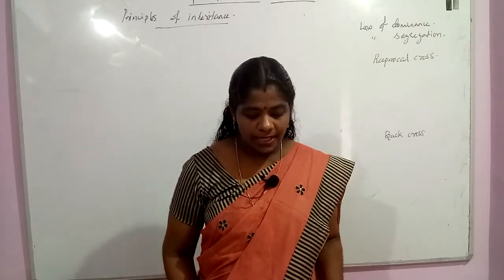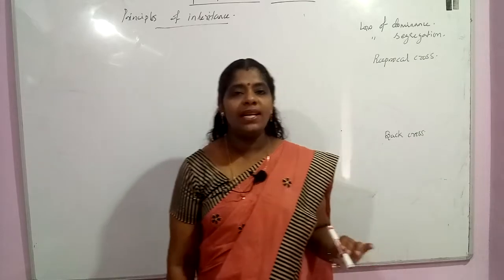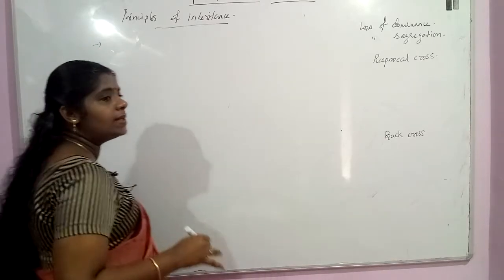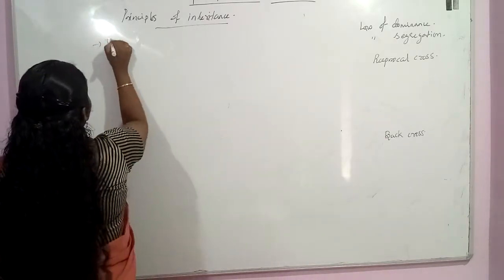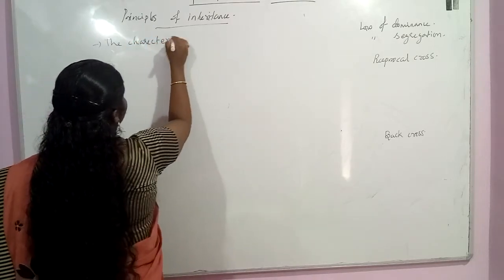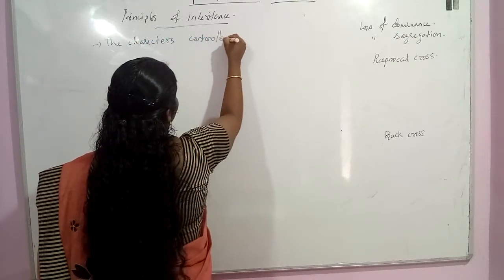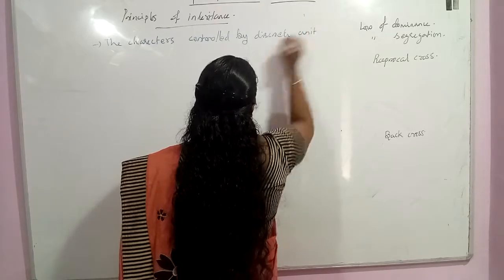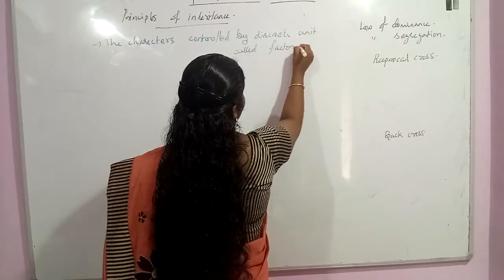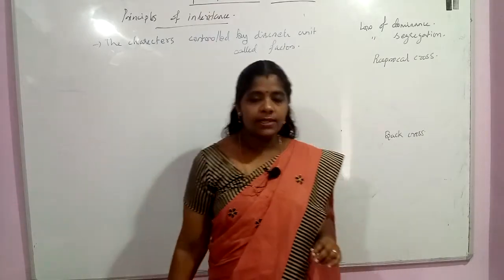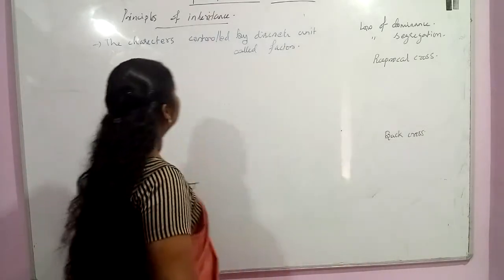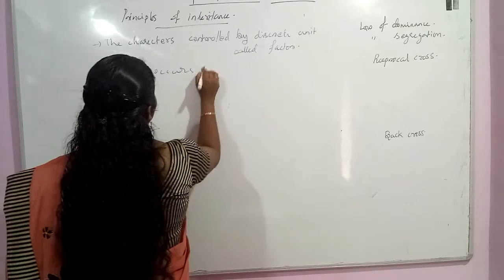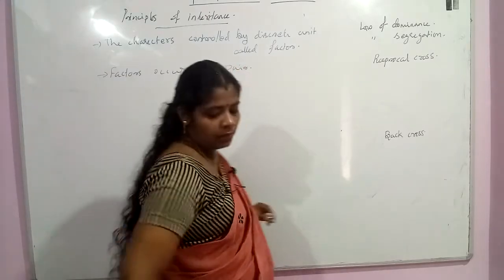The law of dominance states that characters are controlled by discrete units called factors. These factors occur always in pairs.